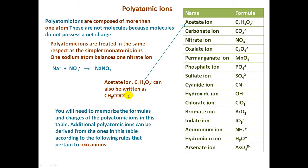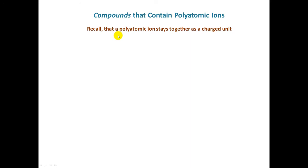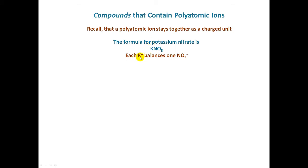Now we're going to go over some rules for oxoanions. Recall that a polyatomic ion stays together as a charged unit. The formula for potassium nitrate is an ionic compound — it's composed of a metal and a negatively charged polyatomic ion. Each potassium ion balances one nitrate ion. Potassium is in group 1A and forms ions with a plus-one charge. We write formulas just like before, except this time we're using polyatomic ions, and the polyatomic ion stays together as a charged unit.